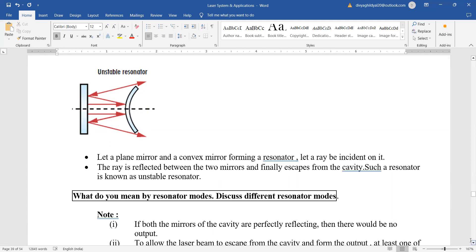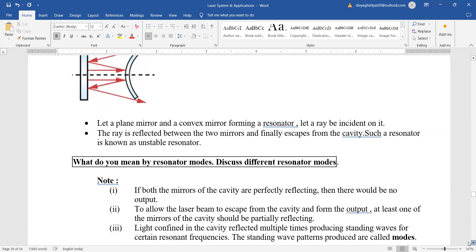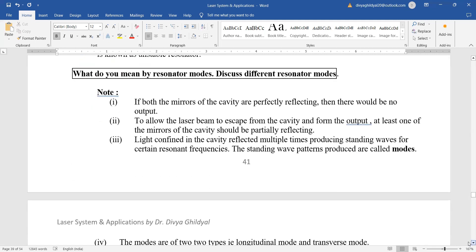What do you mean by resonator modes? Discuss the different resonator modes. If both the mirrors of the cavity are perfectly reflecting, there will be no output as I told you earlier also.